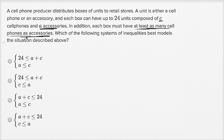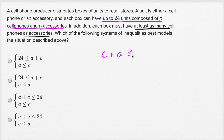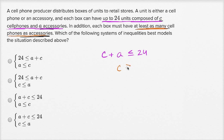So let's just think it through. Each box can have up to 24 units composed of C cell phones and A accessories. That means the C cell phones plus the A accessories can be up to 24 units, so it has to be less than or equal to 24. This is the number of cell phones, this is the number of accessories — you add them together, it has to be up to 24. And then they tell us each box must have at least as many cell phones as accessories, so the cell phones have to be greater than or equal to the accessories.